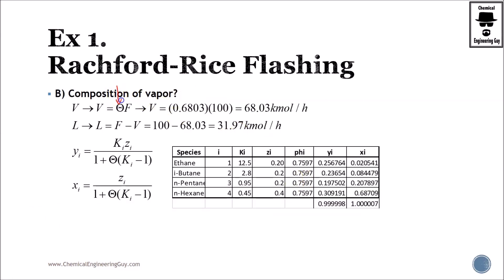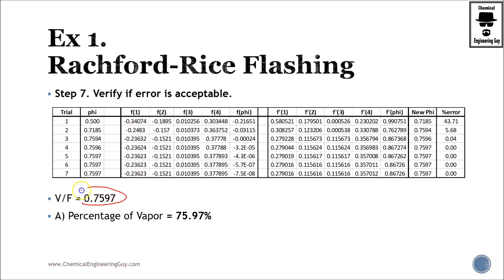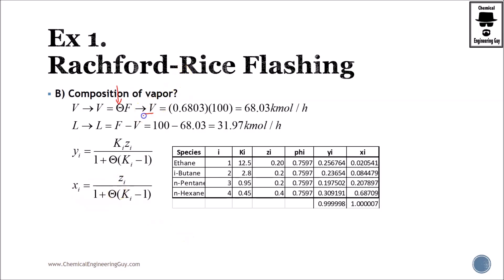Since we got phi value, which is this one right here, we can calculate the vapor because we assume a value of 100 kilomole, which is this one right here, then calculate liquid from the liquid balance or material balance. We got this one right here.